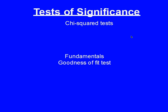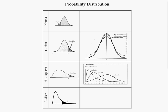Now we get to move on to the chi-squared tests. In this video we'll talk about just the fundamentals of chi-squared and then the first of three tests. To begin with, we have to remind ourselves that I showed you a little while ago four different probability distributions.